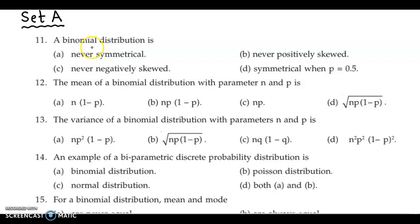Question number 11: A binomial distribution is never symmetrical, never positively skewed, never negatively skewed, and symmetrical when p equals 0.5.